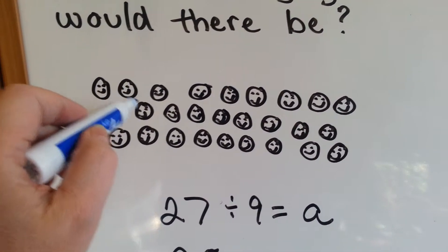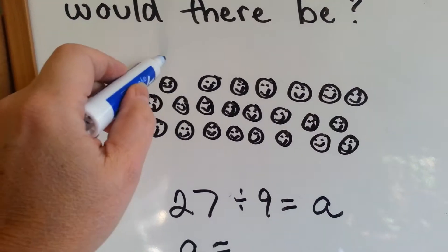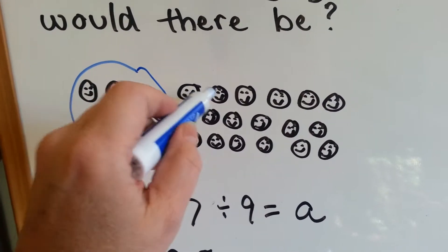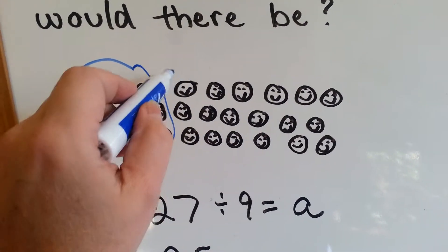1, 2, 3, 4, 5, 6, 7, 8, 9. That's one group. 1, 2, 3, 4, 5, 6, 7, 8, 9. That's another group.